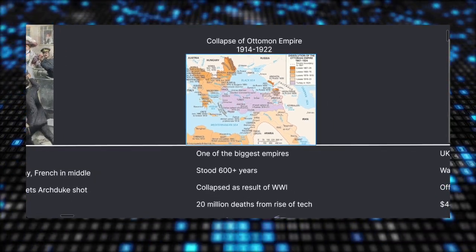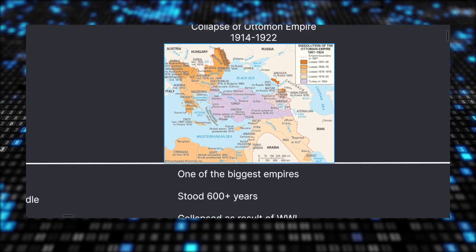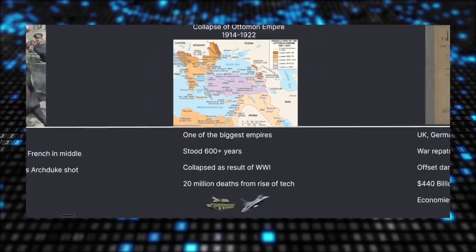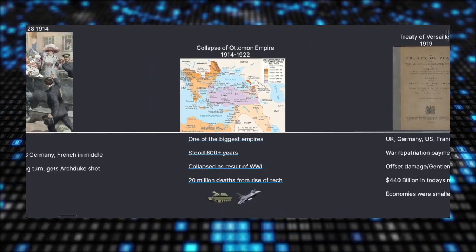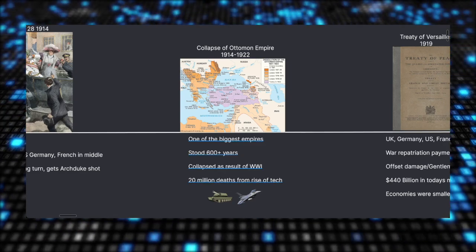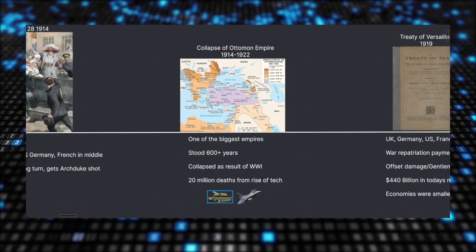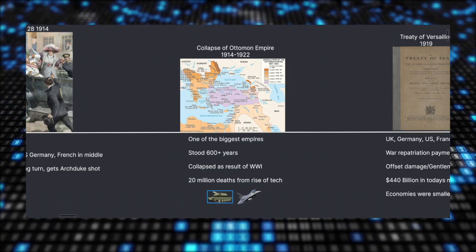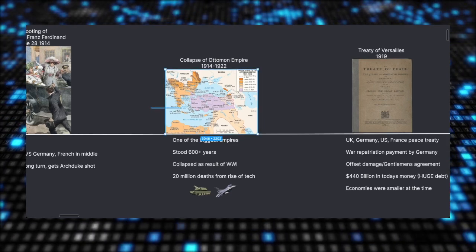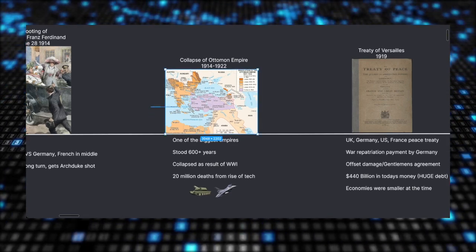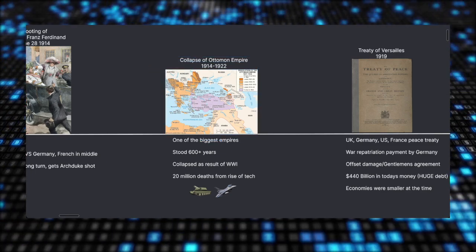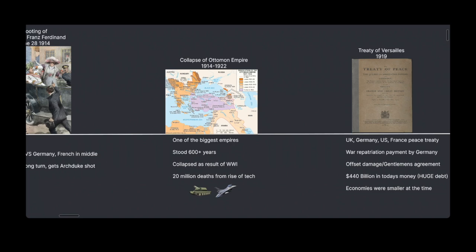We see places like Iran, Arabia, Egypt, Hungary, Russia, and Austria. In World War I we saw 20 million deaths from the rise of technology — we hadn't seen tanks, planes, or jets before. So the amount of damage, not just to the population but also to property and everything, was unprecedented.